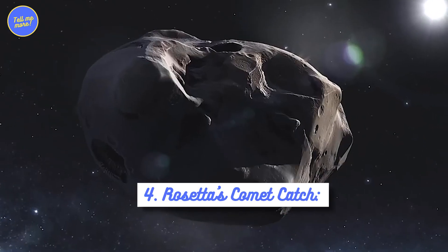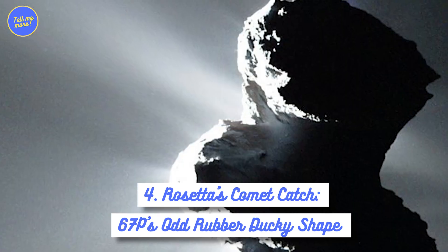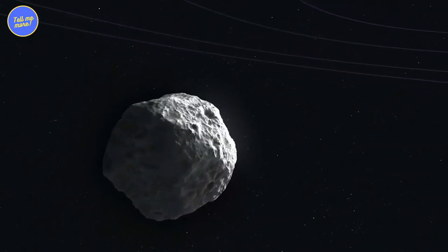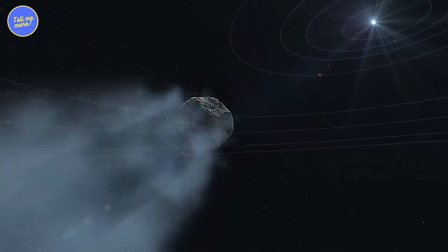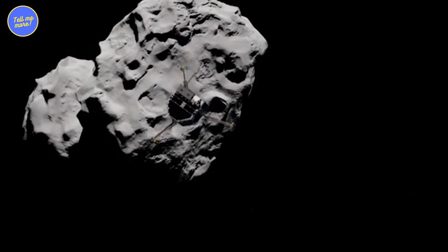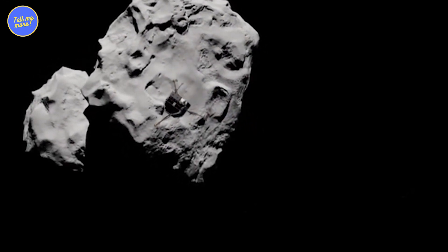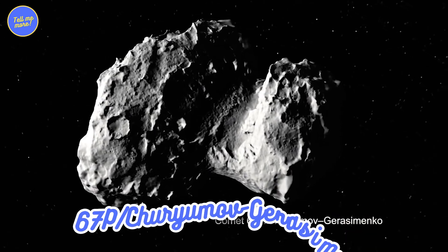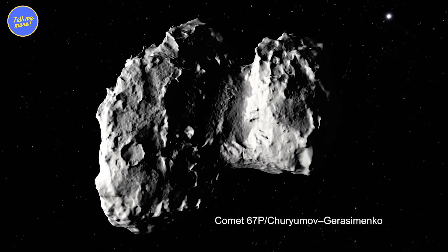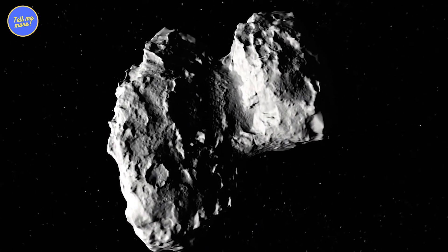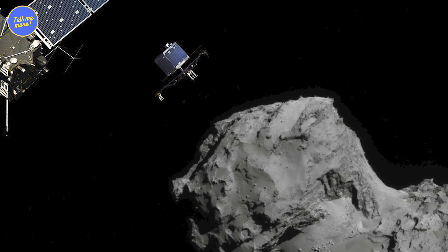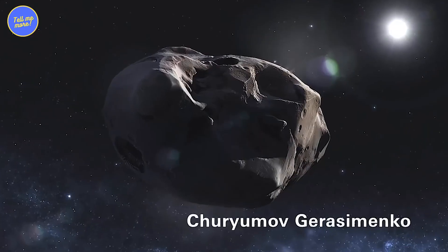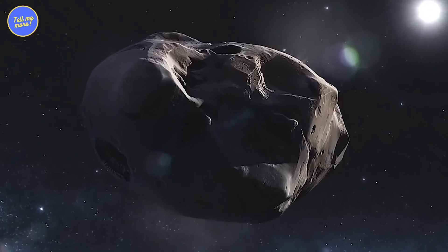4. Rosetta's Comet Catch, 67P's Odd Rubber Ducky Shape. Comets are like the elusive rock stars of the solar system, only showing up every once in a while. But in 2014, the Rosetta mission decided to get up close and personal with Comet 67P, or Churyumov-Gerasimenko. And guess what? This comet wasn't just any old space rock, it had a shape like a cosmic rubber ducky. Seriously, it's like someone was playing space sculptor and decided to create the quirkiest comet ever.